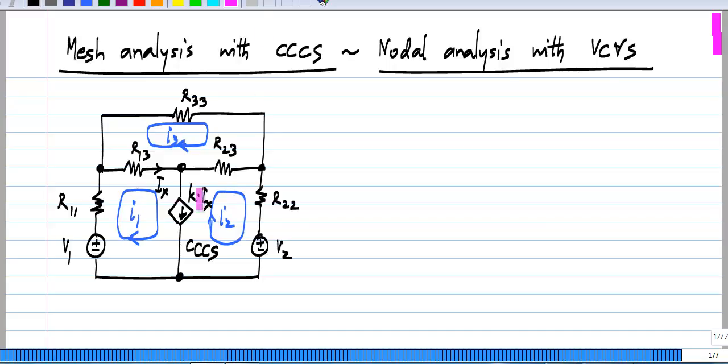What is the problem with having a current source, whether it is independent or controlled? You do not know what the voltage across that is. When we write the equation around this mesh, we do not know what this voltage is without introducing an auxiliary variable for the voltage drop across the current source.